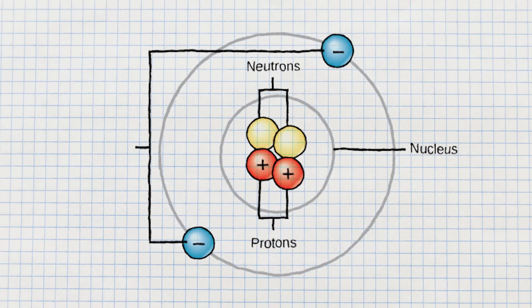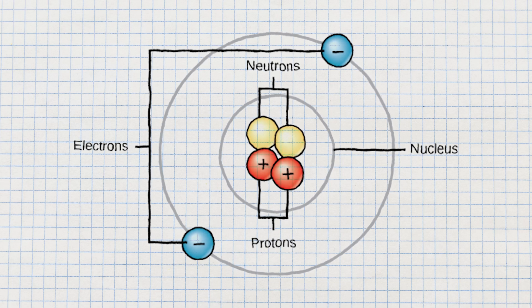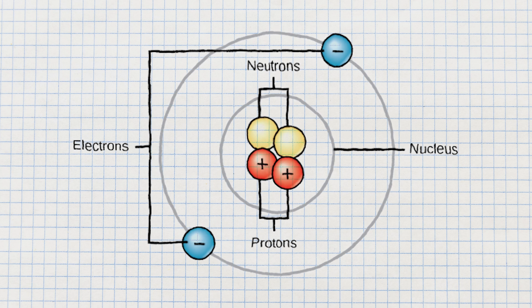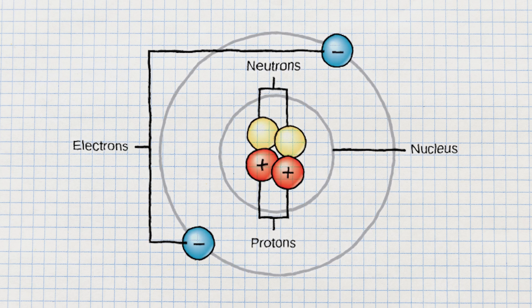Constantly in motion around the nucleus are particles called electrons. These are negatively charged particles, and they can't resist the allure of the positive charge of the protons, so they're perpetually orbiting around the nucleus.